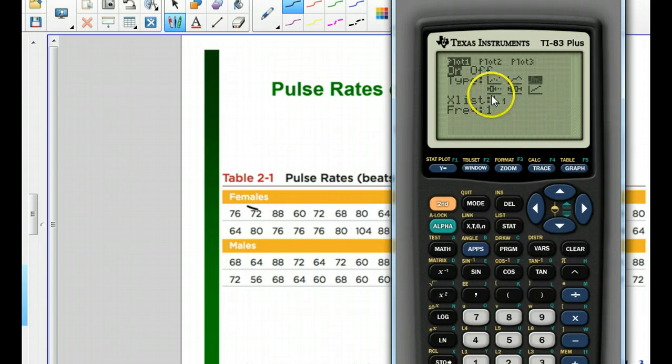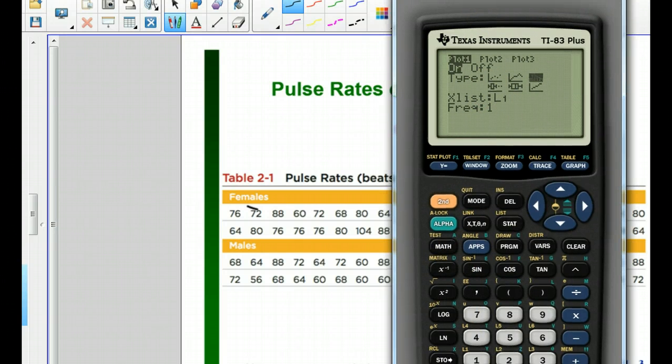The X list, most of the time we put our list in list one, but if you need another list, like if it's in list two or three or four in that stat menu, you press second and either one, two, three, four, five, or six, depending on where your list is.